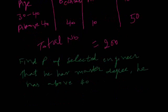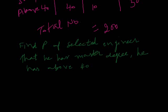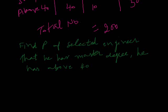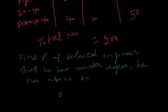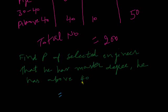At that time we will calculate first of all probability of both happening: master degree and above 40 is 10, so 10 divided by 300 is equal to probability.